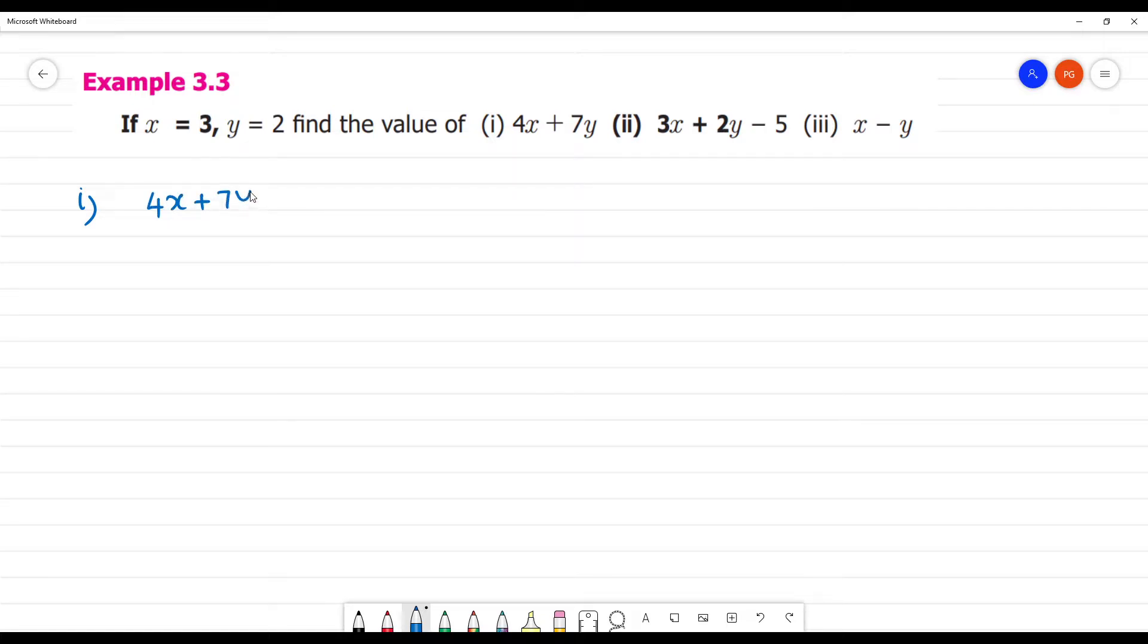4x plus 7y. So x's value, that is 4 into x's value, in the 3, plus 7 into y's value 2. So what is this? 4 threes are 12 plus 14. So 12 plus 14 is how much? 26.